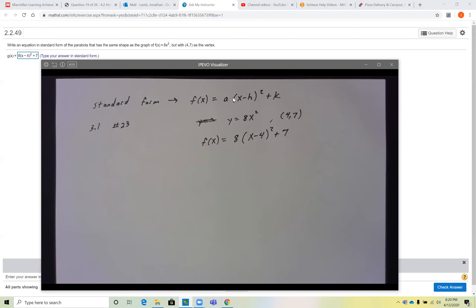It always has to fit that base format: 8 times the group, (x minus the x value of the vertex) squared, plus the y value of the vertex. And check answer, it better say correct.